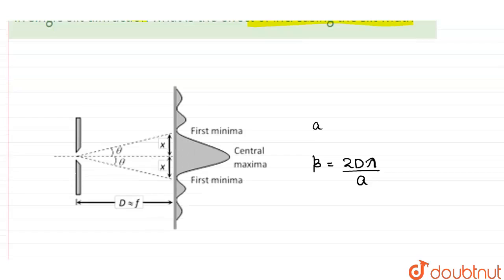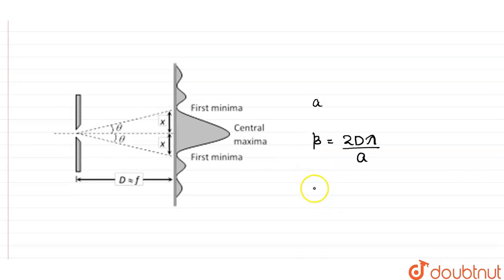Now if we increase the slit width, we can clearly say that beta is inversely proportional to A. So the width of the central maxima beta will decrease. That is the first outcome.